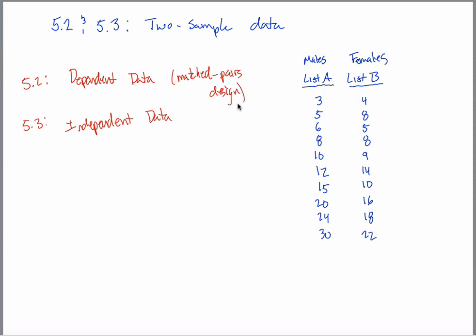So back to my example, these are males and these are females. Let me give you two different ways I can collect this data. So maybe example one, I randomly select 10 married couples. There's 10 observations in each list.